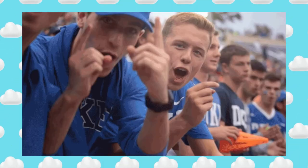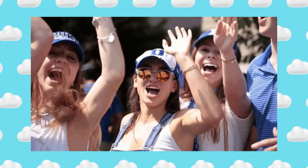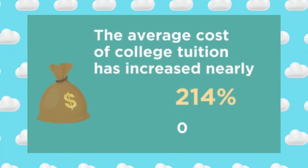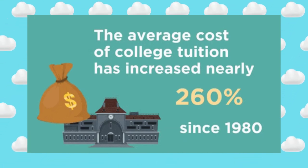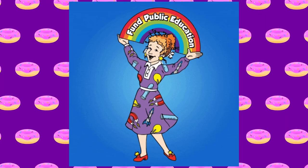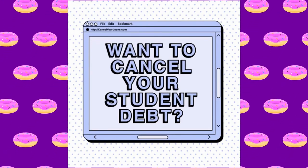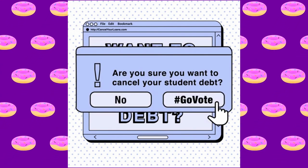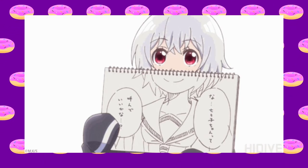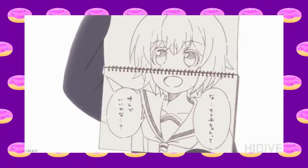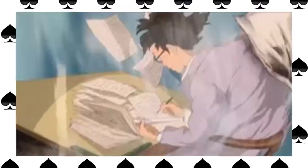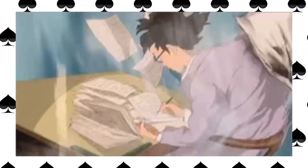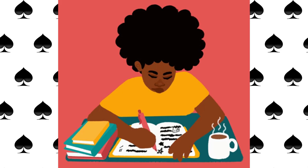The average federal student loan debt is $37,338 per borrower, while private student loan debt averages $54,921 per borrower. The average student borrows over $30,000 to pursue a bachelor's degree. A total of 45.3 million borrowers have student loan debt, and 92% of them have federal loan debt. It's important to check the latest data from authoritative sources such as the Federal Reserve, the U.S. Department of Education, or other relevant government agencies, as these figures can change over time.